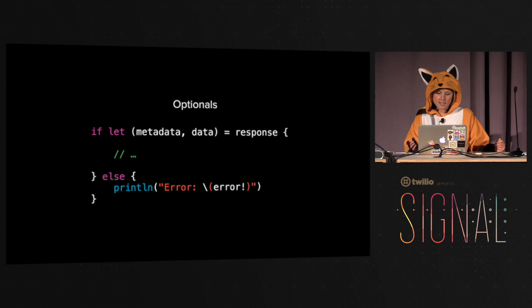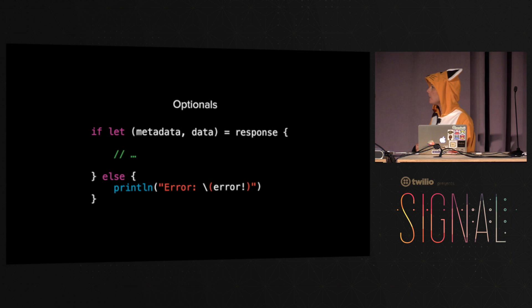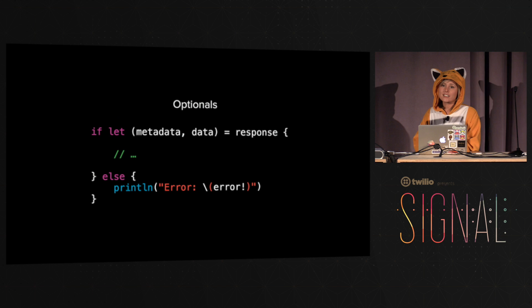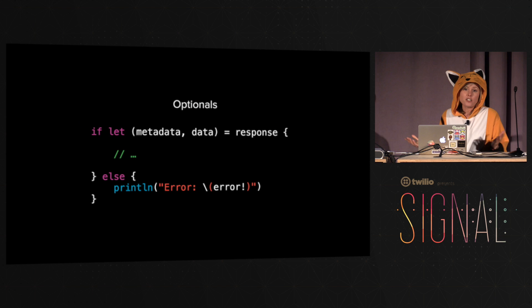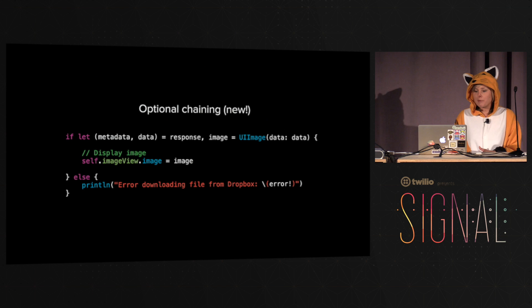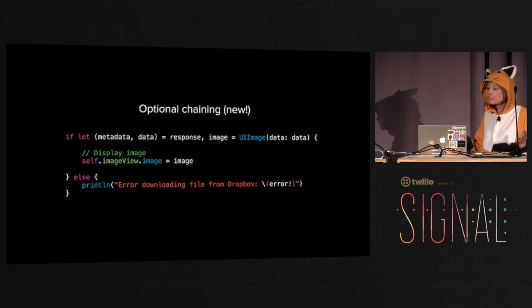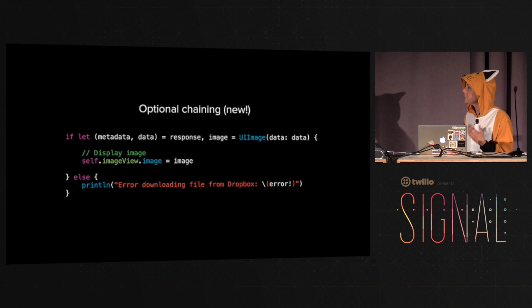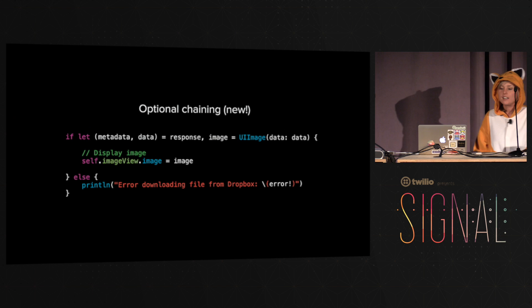Swift also has optionals, which you saw in the code. The ability to do an assignment and nil-check together in one line is super nice — great for APIs. This is one of my favorite features that really shines with Swift and APIs because you don't know what you're getting back from requests to other services; it's super unreliable. Optional chaining is also really great for APIs. For example, in my code I'm getting back a file and I don't even know if it's an image. If that first thing succeeds and I get metadata and data but can't convert it to an image, I don't care — I'll fail to an error either way.